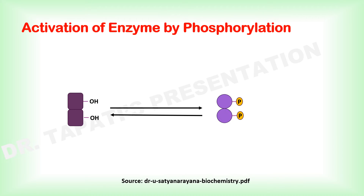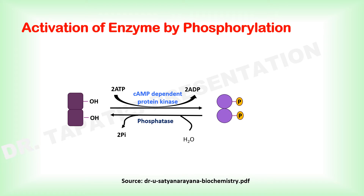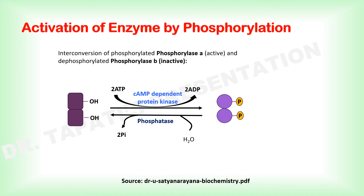Phosphorylation is typically carried out under the control of an enzyme called a kinase, and phosphate groups can be removed by an enzyme called a phosphatase. Glycogen phosphorylase is a muscle enzyme that breaks down glycogen to provide energy. It is a homodimer existing in two interconvertible forms: dephosphorylated phosphorylase B, which is inactive, and phosphorylated phosphorylase A, which is the active form.